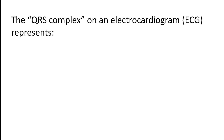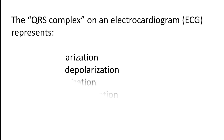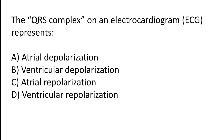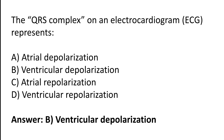The QRS complex on an electrocardiogram (ECG) represents ventricular depolarization. The correct answer is option B: the QRS complex on an ECG represents ventricular depolarization.